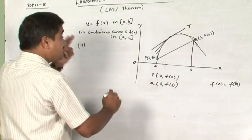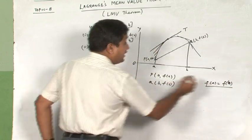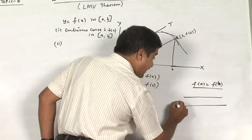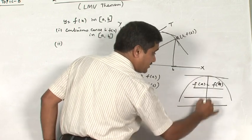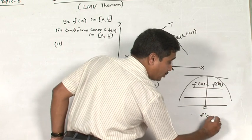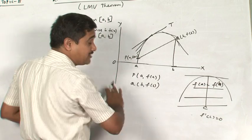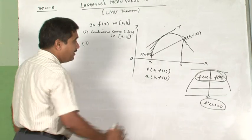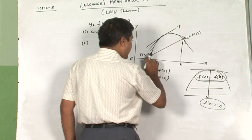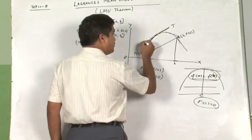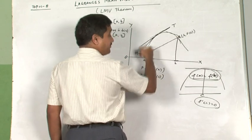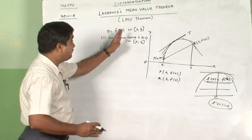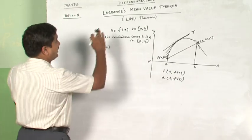The reason f(a) = f(b) is not required in Lagrange's MVT is that in Rolle's theorem the chord is parallel to the x-axis, requiring f'(c) = 0. Since Lagrange's MVT does not insist the slope becomes 0, that clause is unnecessary. Lagrange took a chord joining P and Q and asked: for a curve that is continuous and differentiable, can we find a tangent parallel to that chord? Indeed we can — that is why Lagrange's MVT exists.